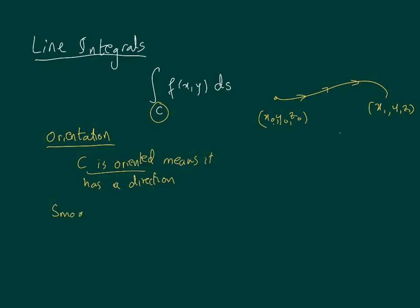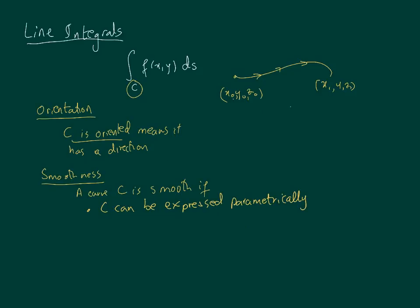Next idea is smoothness. A curve C is smooth if it can be expressed parametrically, in terms of x(t), y(t), z(t). The second condition is that x'(t)² + y'(t)² + z'(t)² cannot be identically 0. If this is 0, then it is not smooth. But if it is not 0, then it is smooth.